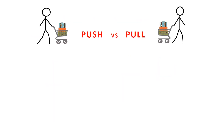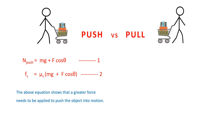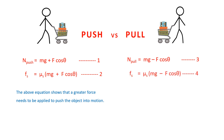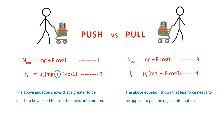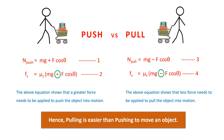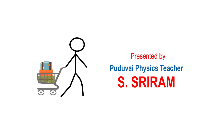Push versus pull: N push equals Mg plus F cos theta, and F s equals mu s times (Mg plus F cos theta). This equation shows that a greater force needs to be applied to push the object into motion. Hence, pulling is easier than pushing to move an object.